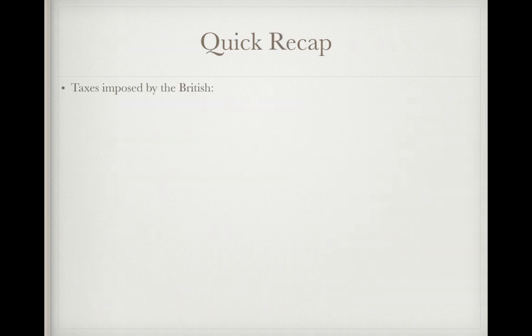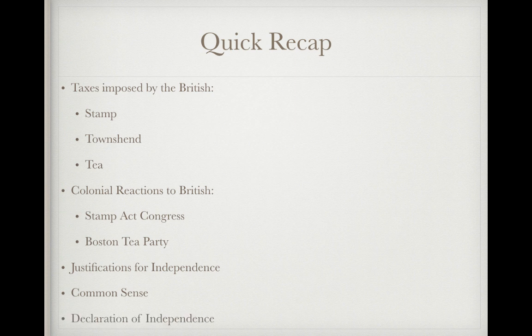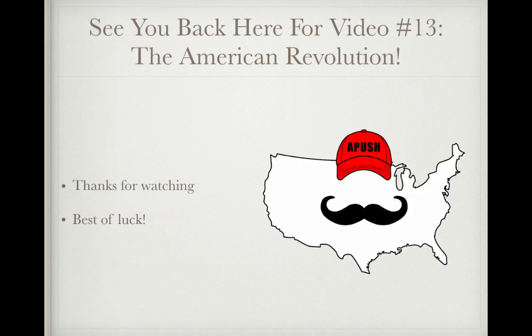For the quick recap: be familiar with taxes imposed by the British — the Stamp Act, the Townshend Act, and the Tea Act. Colonial reactions included the Stamp Act Congress, the Boston Tea Party, and the First Continental Congress. Justifications for independence included the rights of individuals and Enlightenment ideas. Common Sense encouraged America to break away, which helped influence the Declaration of Independence. Thanks for watching — look forward to seeing you back for the American Revolution in the next video. Best of luck this year and have a good day.